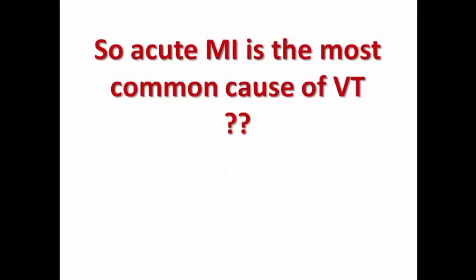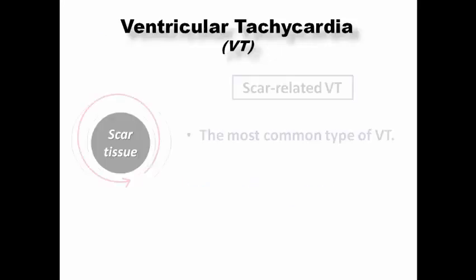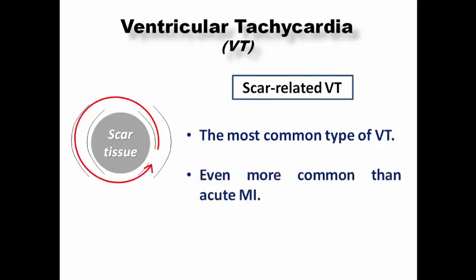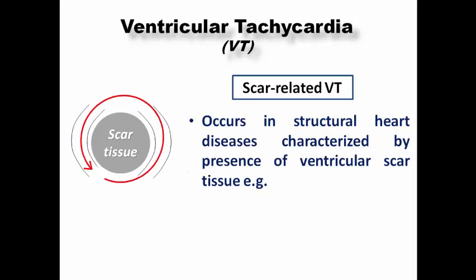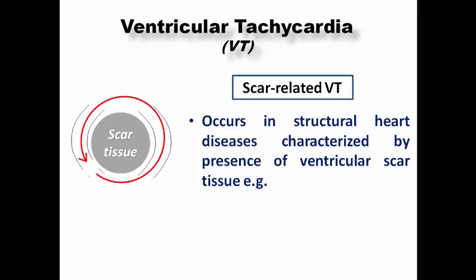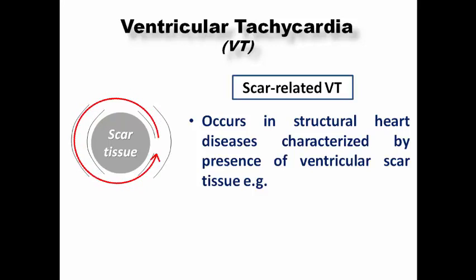So can we conclude that acute MI is the most common cause of VT? Unfortunately, no. Scar-related VT is the most common type, even more common than the reversible cause of acute MI. It occurs in structural heart disease characterized by scar tissue inside the ventricular muscles, where the re-entrant circuit forms around the scar tissue.